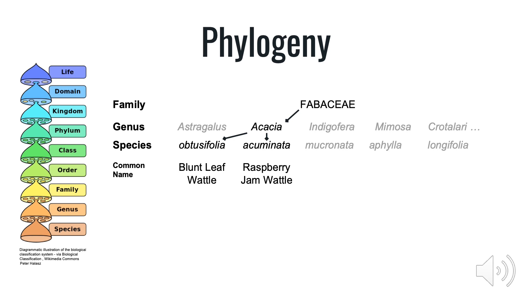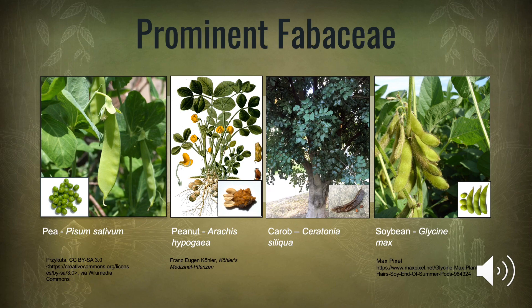Acacia belongs to a large family of plants called Fabaceae, which contains over 740 genera and over 19,000 species. Plants in Fabaceae, which include herbs, shrubs and trees, are also known as legumes. Many Fabaceae, including Acacia, are known to have a symbiotic association with nitrogen-fixing soil bacteria.